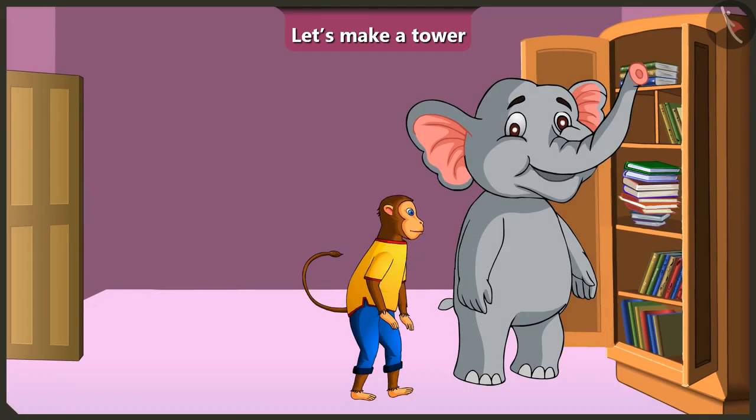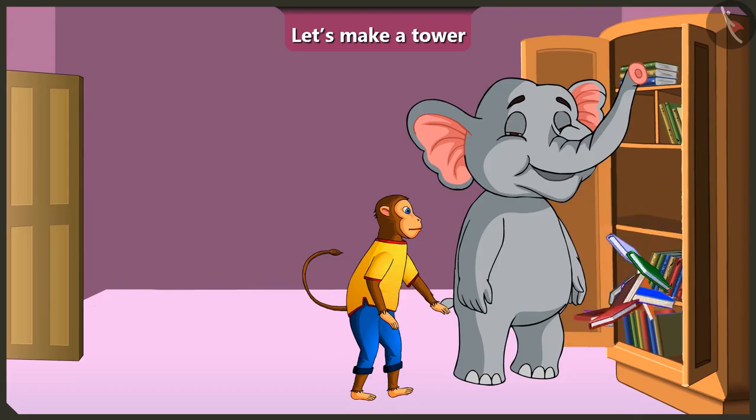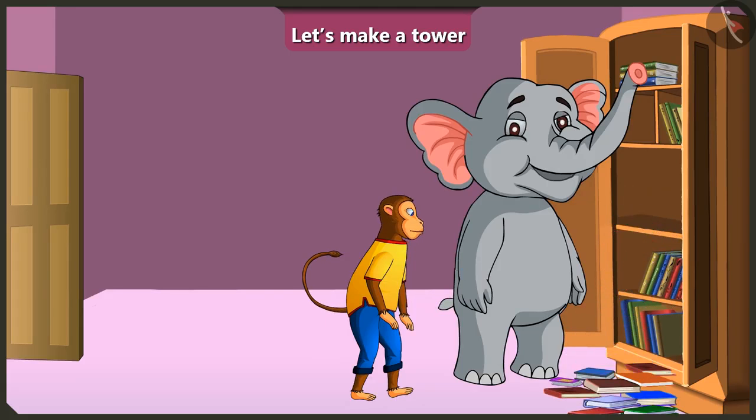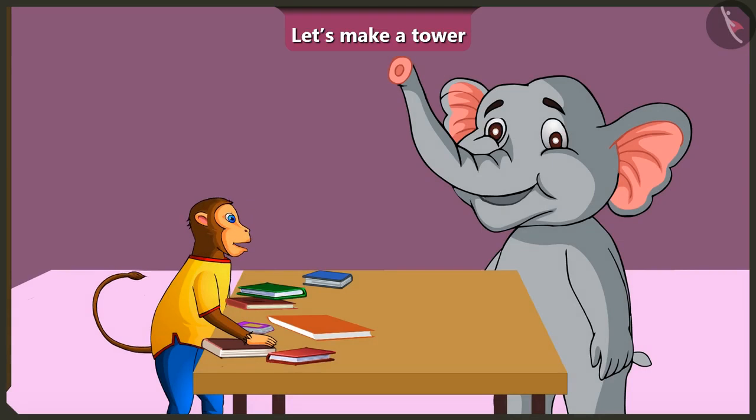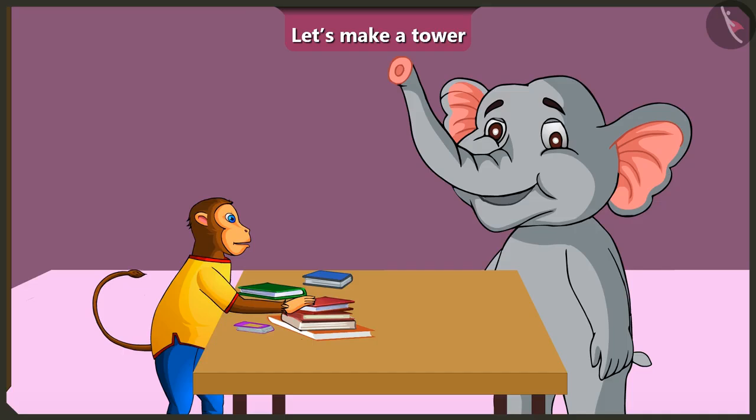Appu, you are placing the smaller books at the bottom and big books on the top every time. That is the reason it's happening. See Appu, the tower will remain stable only if you place big books at the bottom and small books on top of that.